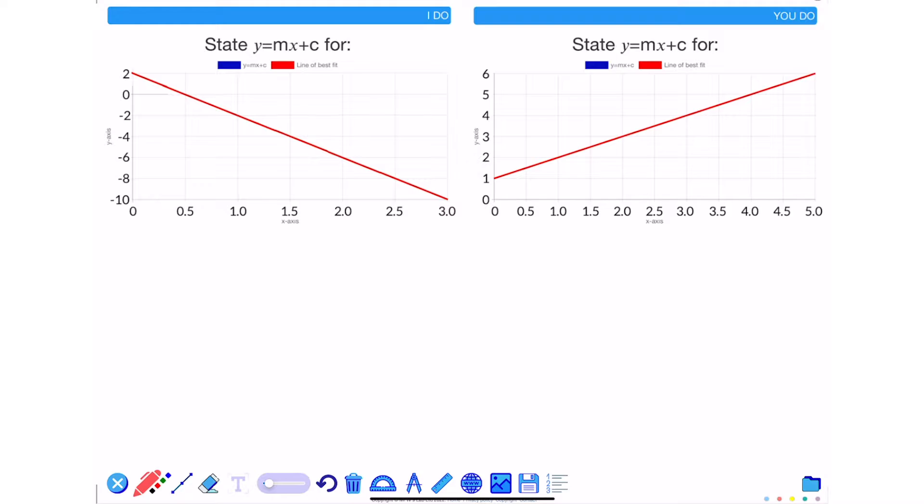In this video we're going to be looking at how we can calculate the equation of a straight line from a graph. The equation of a straight line always comes in the form of y equals mx plus c, where y and x are the coordinates that form the straight line.